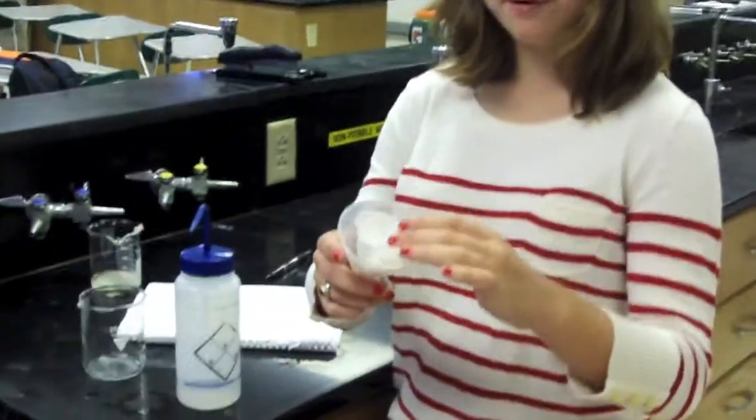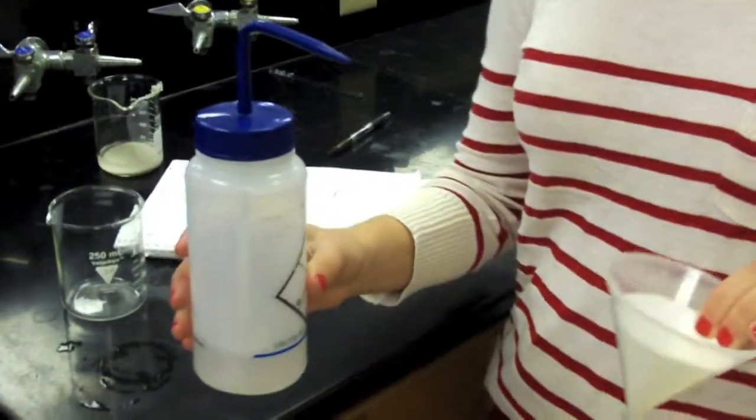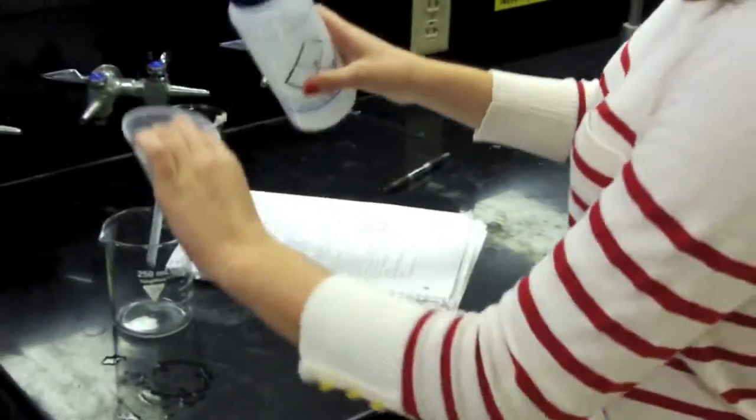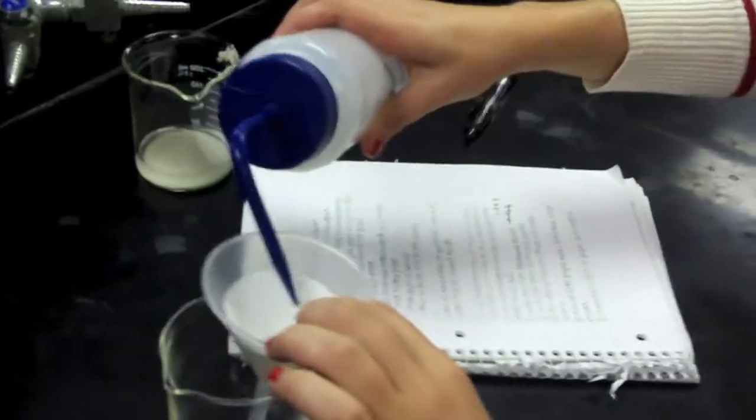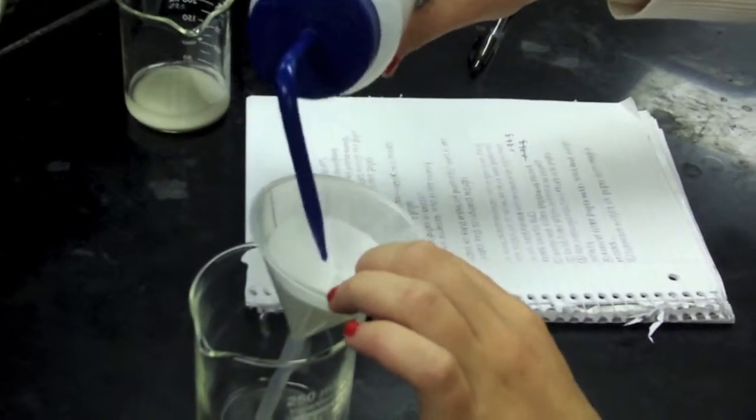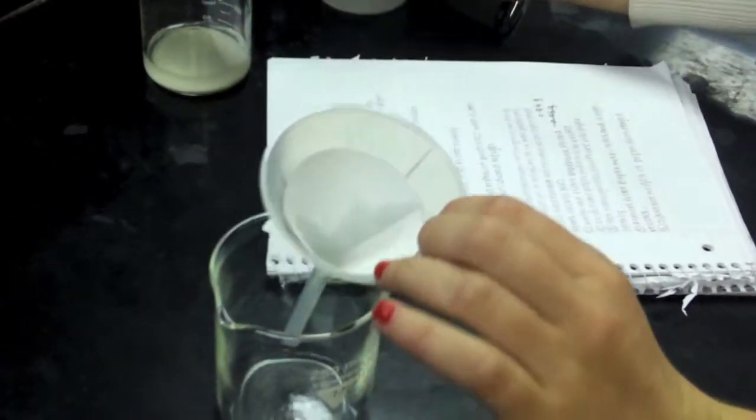If the filter paper doesn't really stay in the funnel well, you can use this DI water to make sure it does stay. Set it inside of the beaker and just get it a little wet so that it stays in place like this.